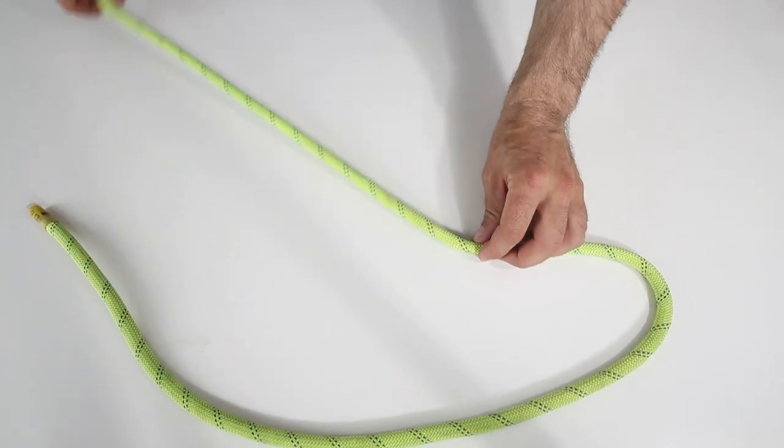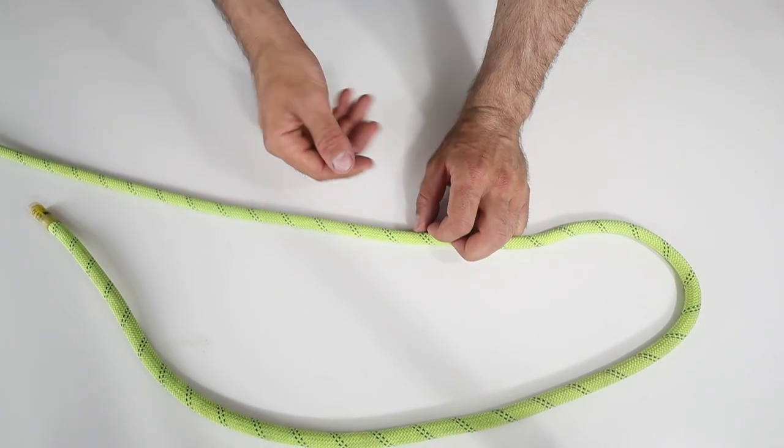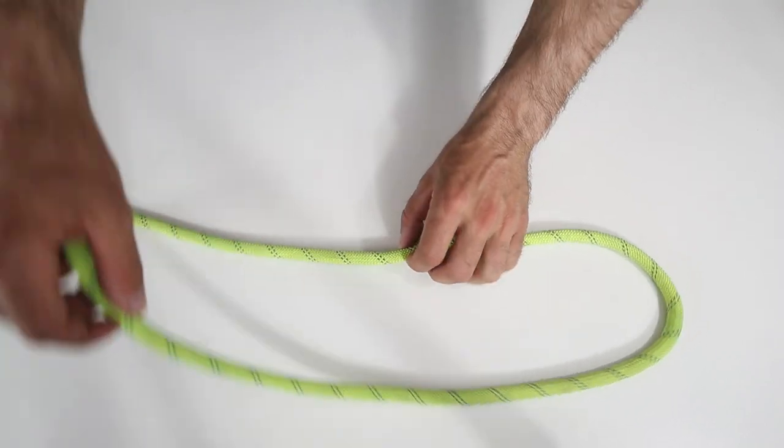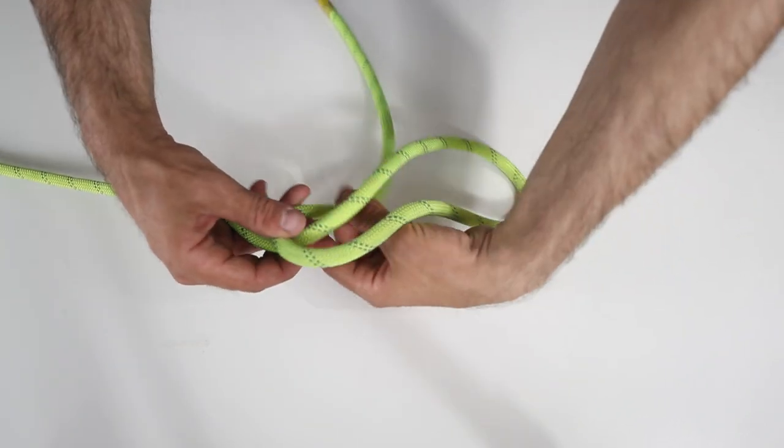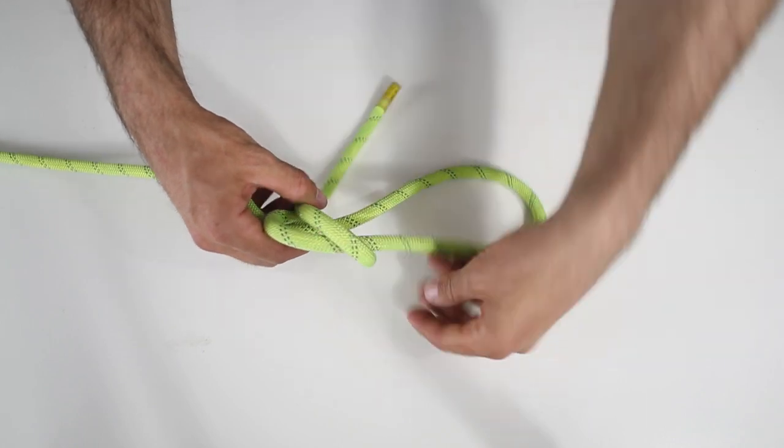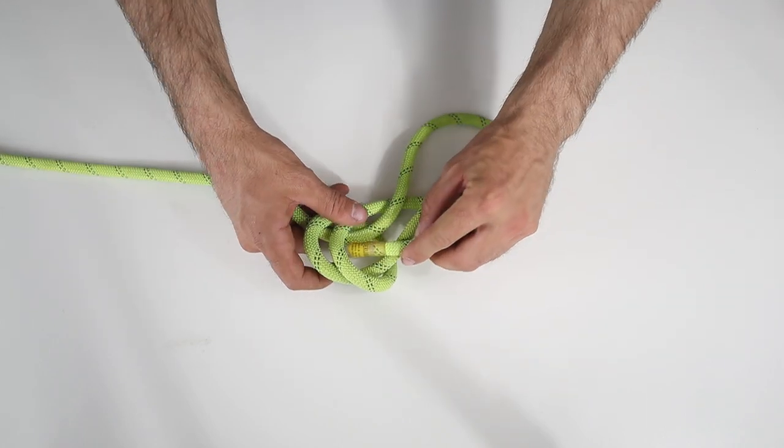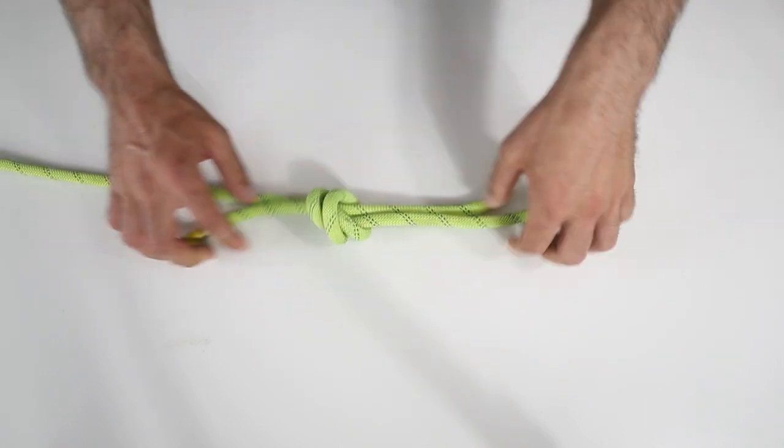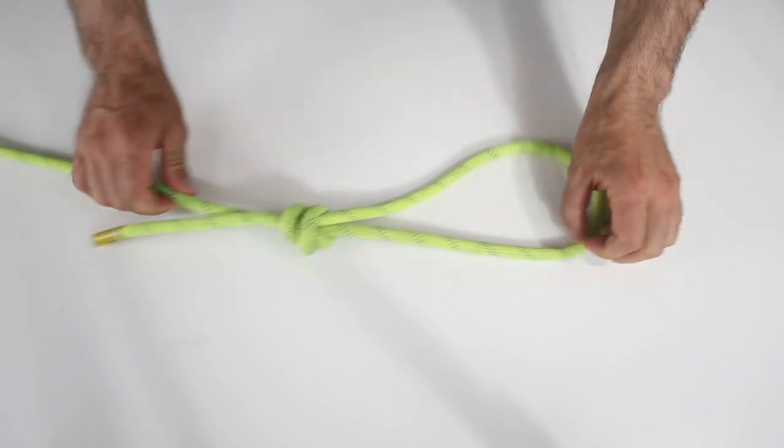Okay, have you seen my double fisherman video? It's actually really similar to a double fisherman. So you're just gonna pass it over twice, once, twice, and just right through here. And then there you go. That's a scaffold knot.